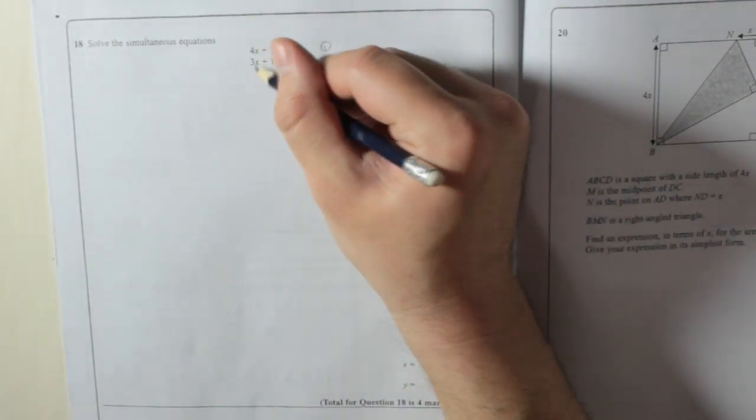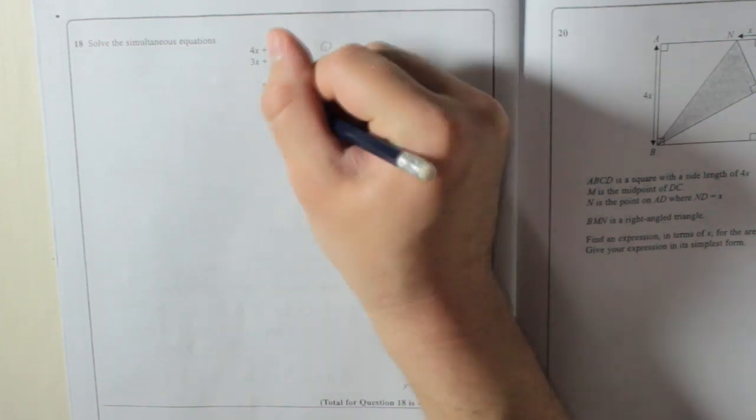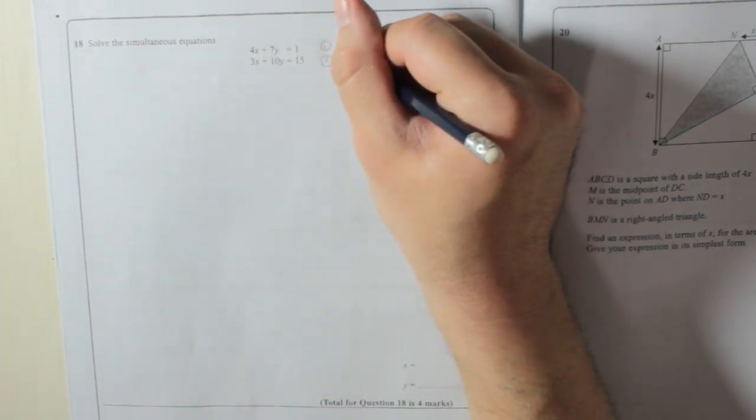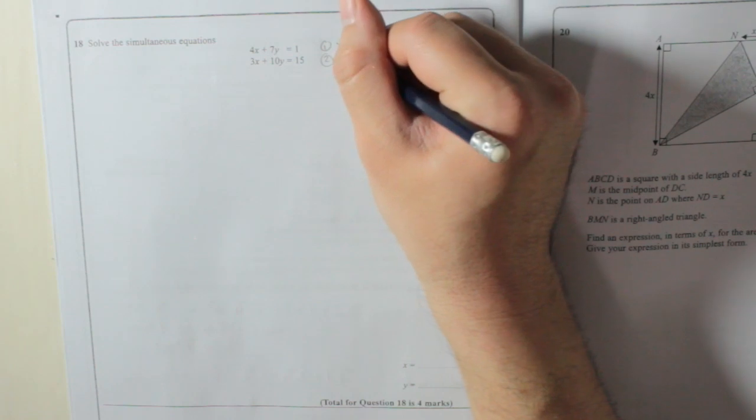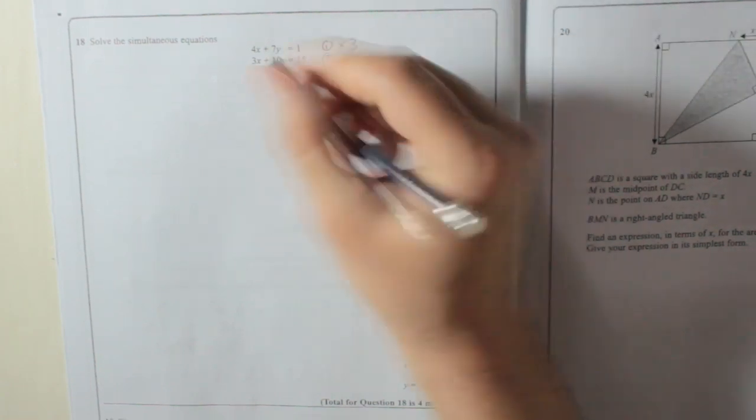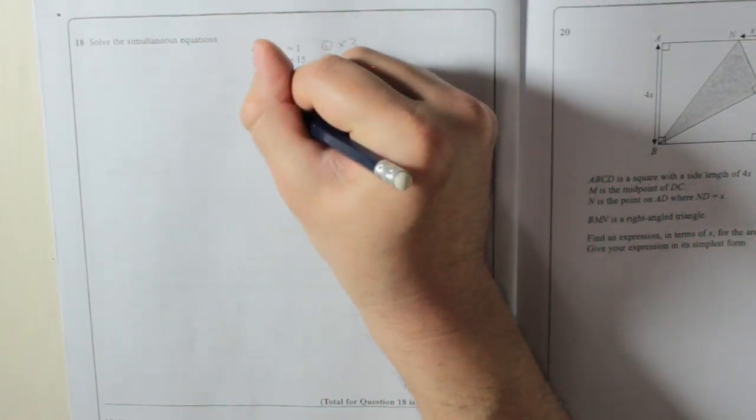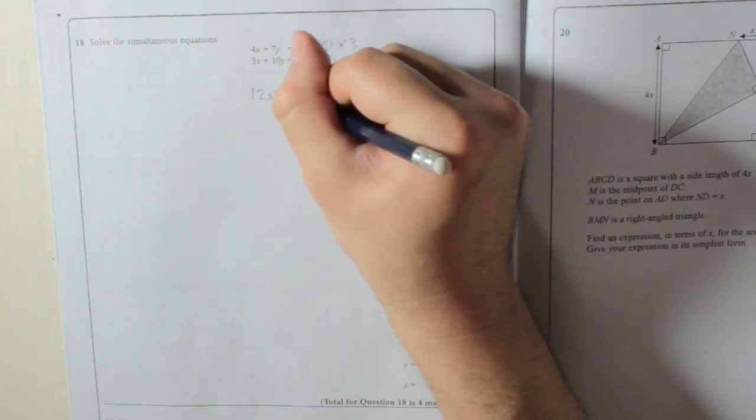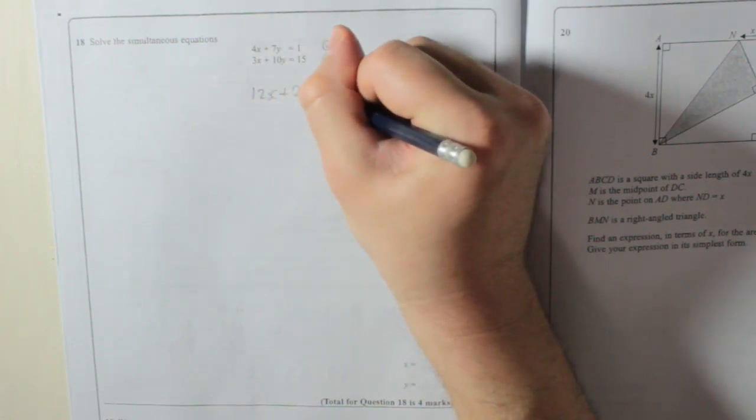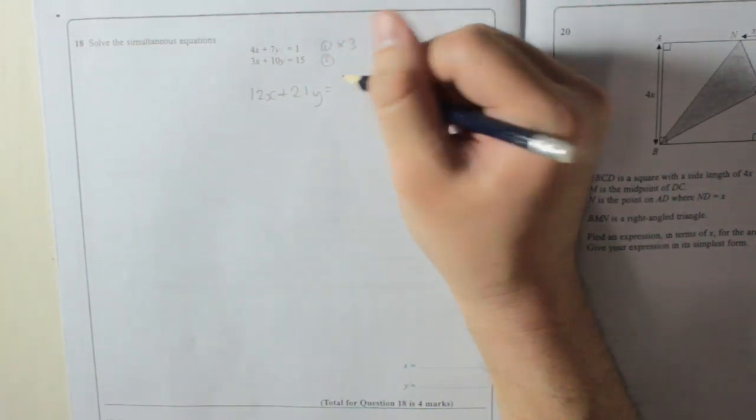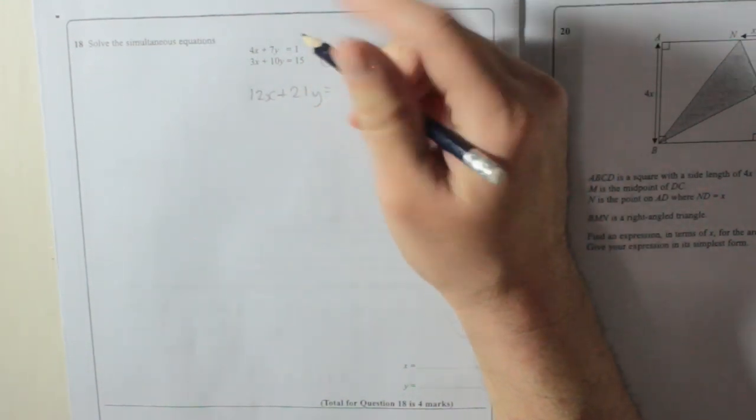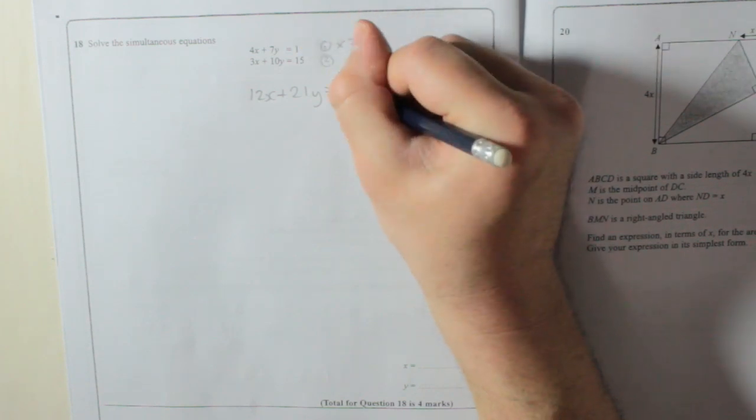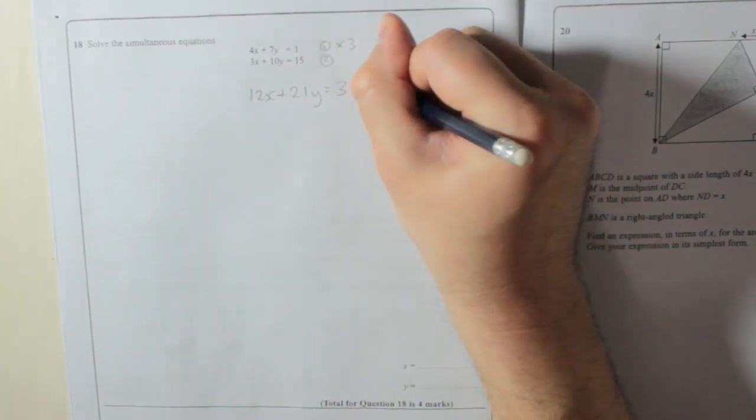So 4 and 3 both go into 12. For equation 1, I'm going to multiply it by 3 to get 12x. So 4x times 3 is 12x, which is what we wanted. 7y times 3 is 21y equals—and here's the mistake a lot of people make, they'll just put 1, but no—you've got to multiply that by 3 as well, so that equals 3. I'll call that equation 3.